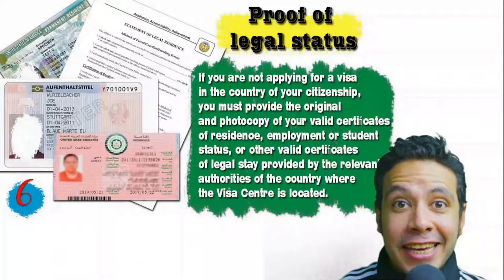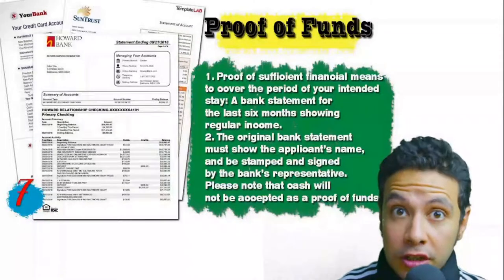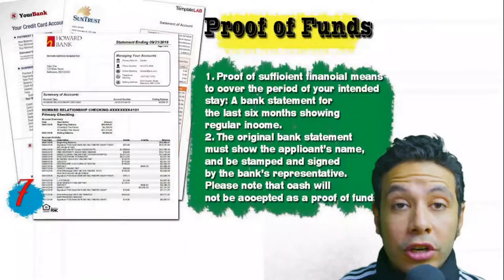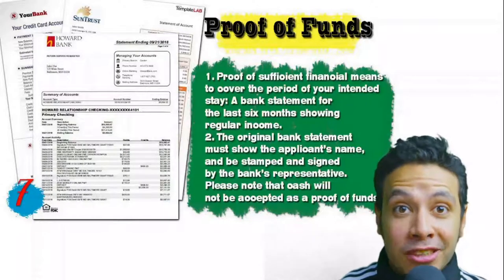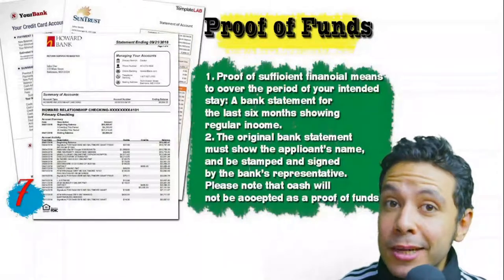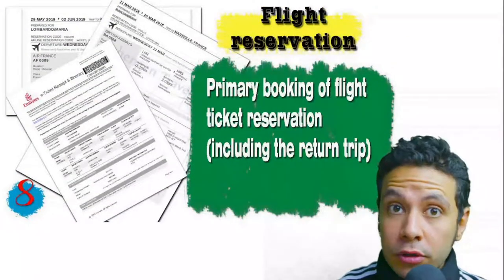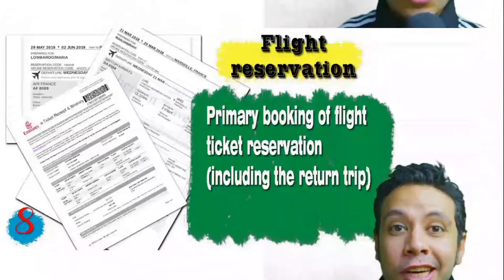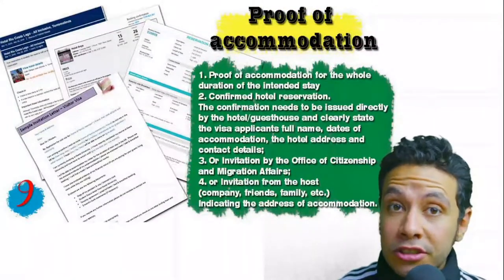You will also need to provide proof of sufficient funds — a bank statement showing your balance for at least six months. The original bank statement must show your name and be signed and stamped by a bank representative. Remember that cash will not be accepted as proof of funds. You should also provide a flight reservation — an initial booking is usually acceptable, though in some cases a confirmed booking is required. This flight reservation must include a return ticket.